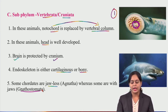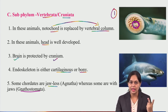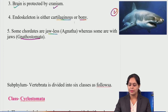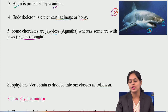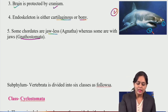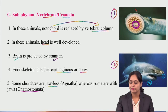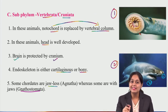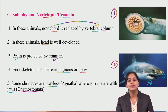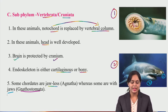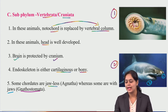Whereas some vertebrates are Gnathostomata — meaning they have jaws. They have both maxilla (upper jaw) and mandible (lower jaw). Gnatha means jaws; Agnatha means no jaw present. The second example given is a whale, which has both maxilla and mandible — two jaws present — that is why it can open its mouth. That is Gnathostomata.